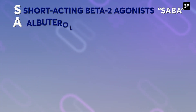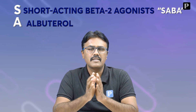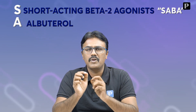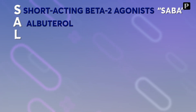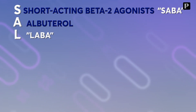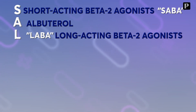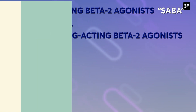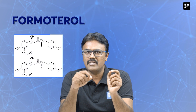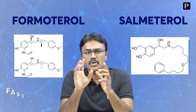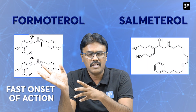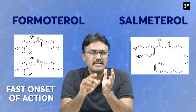The next letter is L. Apart from SABA, do we have any other drugs? Yes, they are called LABA — Long-Acting Beta-2 Agonists. Two drugs are there: formoterol and salmeterol. Remember, formoterol starts with F so it has a fast onset of action, while salmeterol has a slow onset of action.